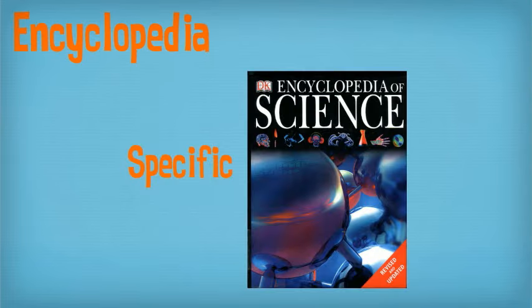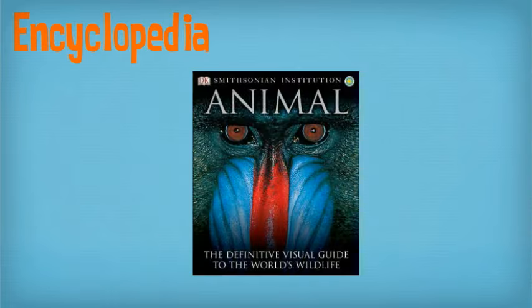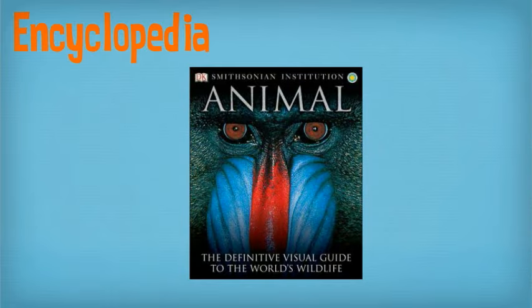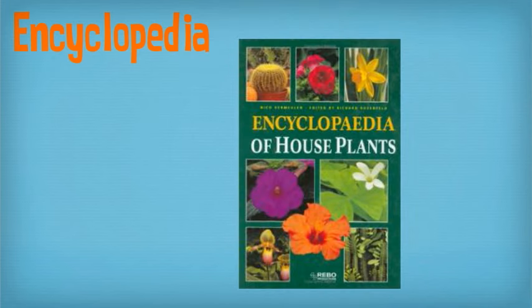Whereas a specific encyclopedia covers one particular topic. That could be science, like the example here, or it could be sports, animals, famous people like presidents, or even plants. But whatever that topic is, that is the only type of information you will find in that encyclopedia.